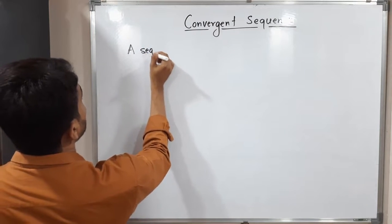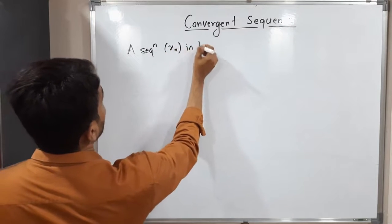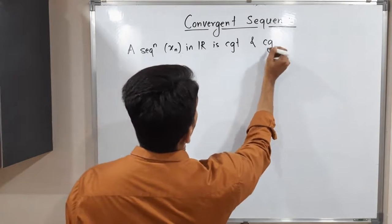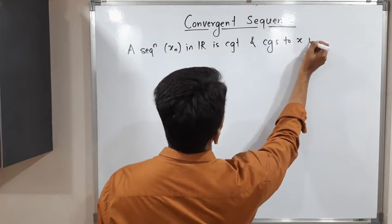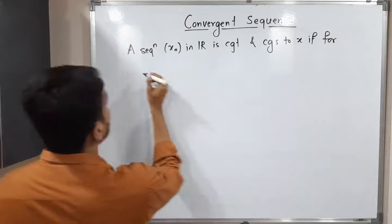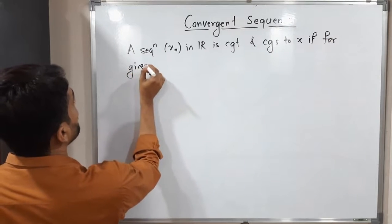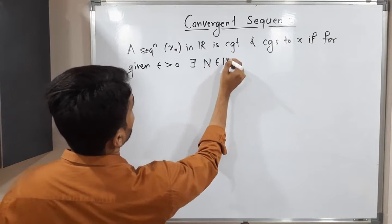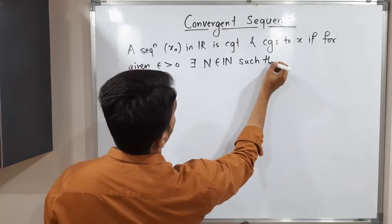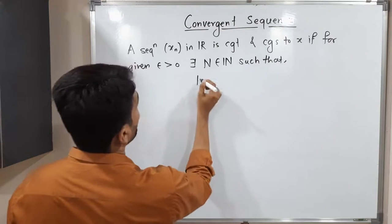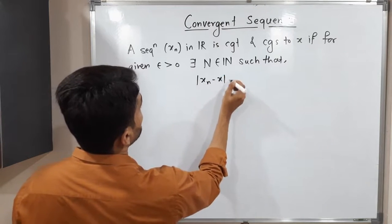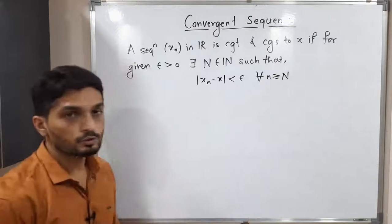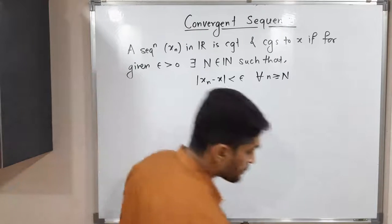A sequence xₙ in ℝ is convergent and converges to x if: for given epsilon greater than zero, there exists a natural number N such that mod(xₙ − x) is less than epsilon for all n greater than or equal to capital N. You are familiar with this definition.